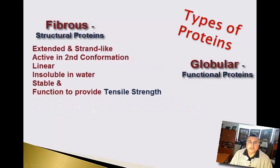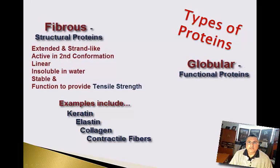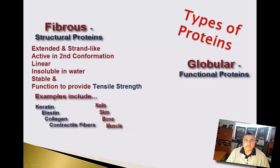Examples of fibrous proteins include keratin, elastin, collagen, and certain contractile proteins. We would find these fibrous proteins in organs and tissues such as bone, skin, muscles, hair, and nails.